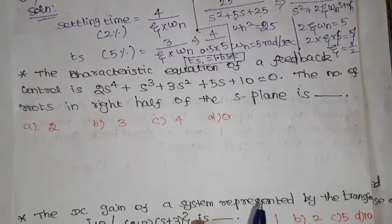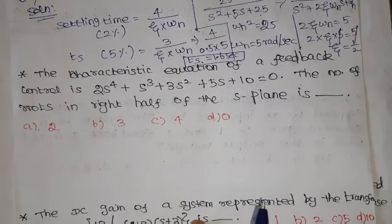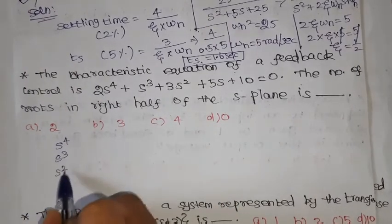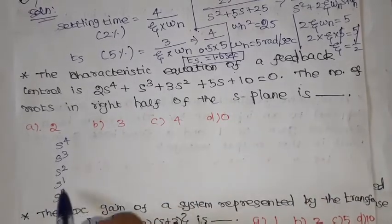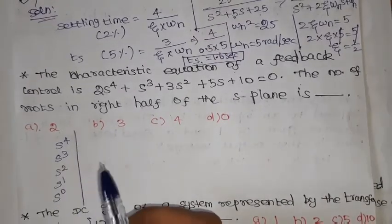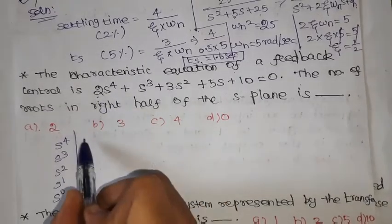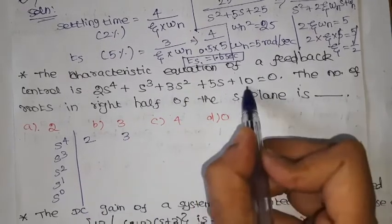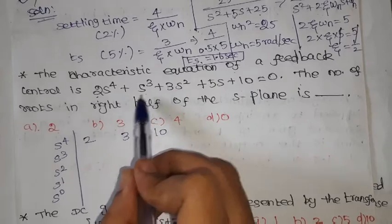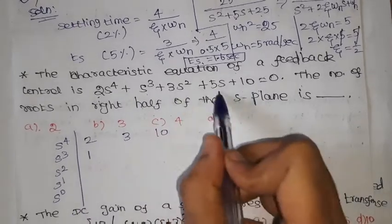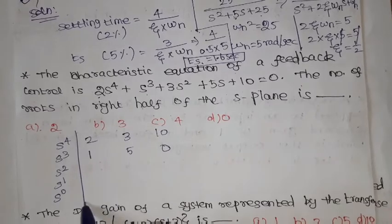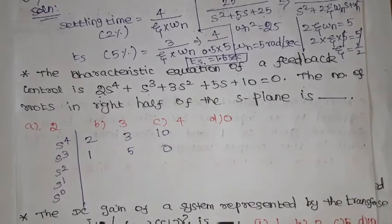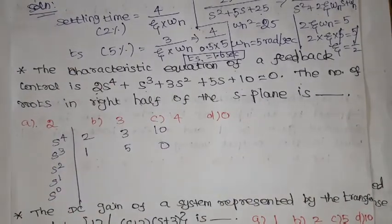To solve this using the Routh-Hurwitz criterion, we form the Routh array. The rows correspond to s⁴, s³, s², s¹, and s⁰. Filling in the coefficients from the characteristic equation: for the s⁴ row, even-indexed coefficients are 2, 3, and 10; for the s³ row, odd-indexed coefficients are 1 and 5, with 0 in the third position.